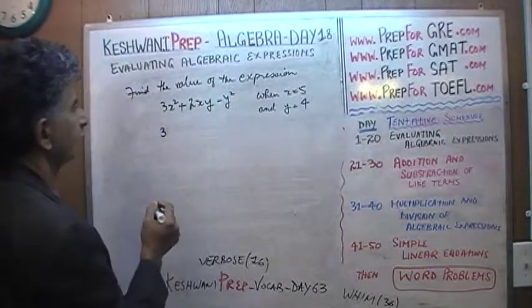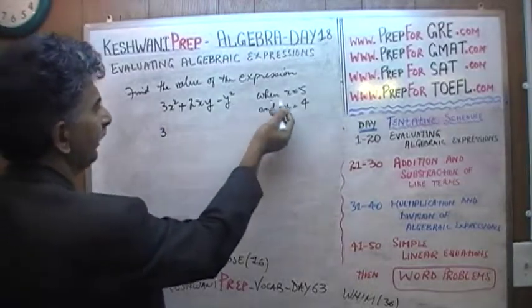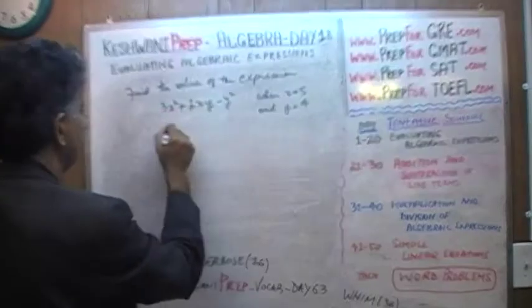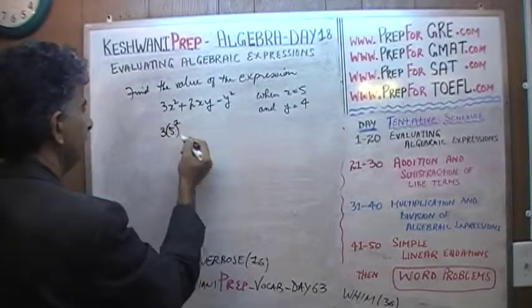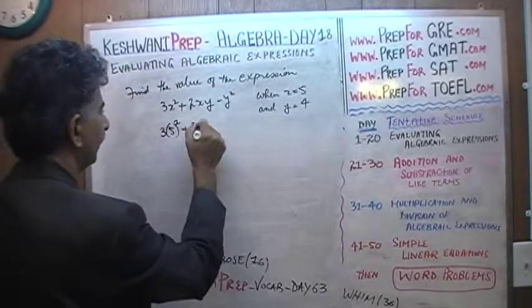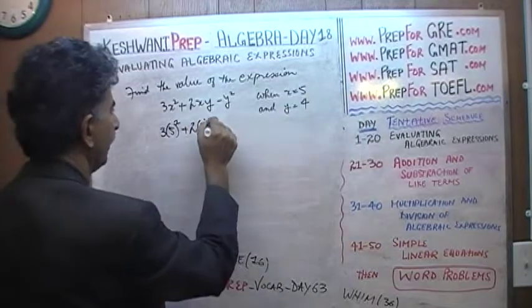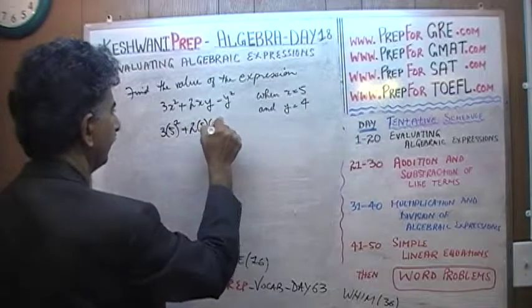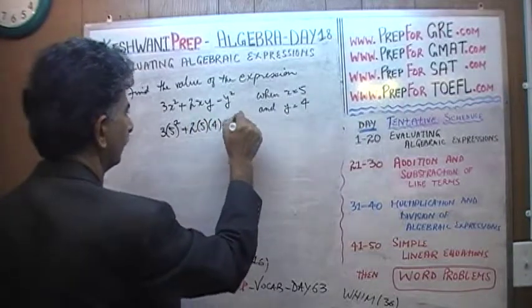So 3x squared — x is 5, so it's 3 times (5) squared — plus 2 times (5) times y, minus 4 squared.